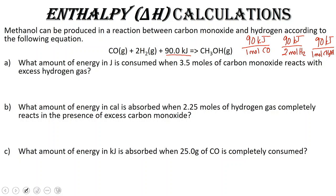We can use that conversion factor to determine how much energy is involved given different amounts of reactants and products. The first question asks: what amount of energy in joules is consumed when 3.5 moles of carbon monoxide reacts with excess hydrogen gas? We're given 3.5 moles of CO and delta H is 90.0 kilojoules. We need the energy in joules, so we'll need to convert from kilojoules.